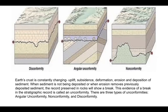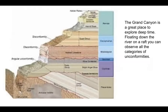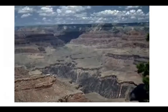Angular unconformity is my favorite of the three types. We're going to look at examples of all three. The Grand Canyon is a great place to explore because you can see all of these things in one place — you can float down the river on a raft. You can see the great nonconformity, where billions of years of geological history are missing. The Grand Canyon is truly an amazing place.